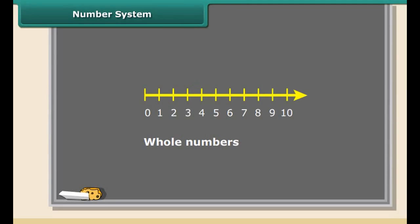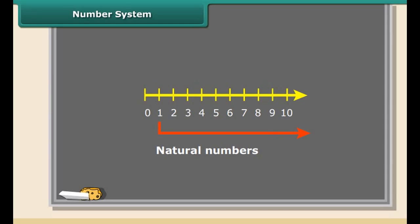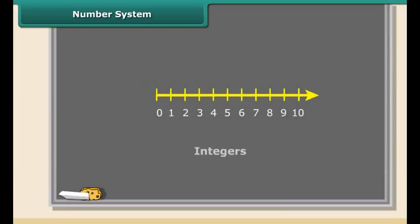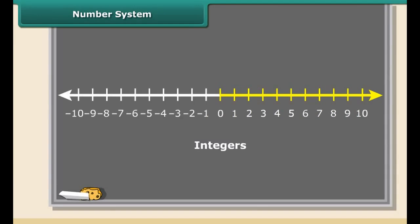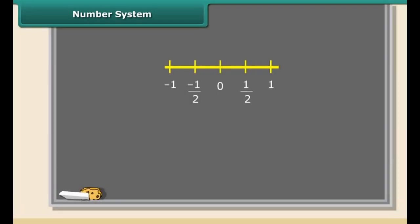Whole numbers are simply the numbers 0, 1, 2, 3, 4, 5 and so on — there are no fractions. Natural numbers are the positive whole numbers except zero. Integers are like whole numbers but they also include negative numbers, so integers can be positive, negative, and zero.